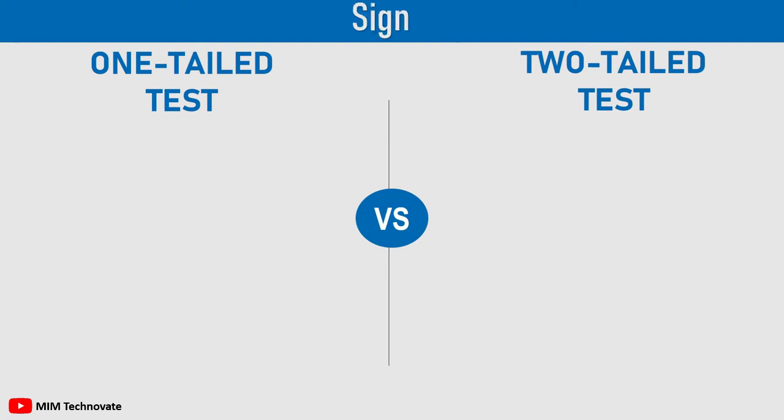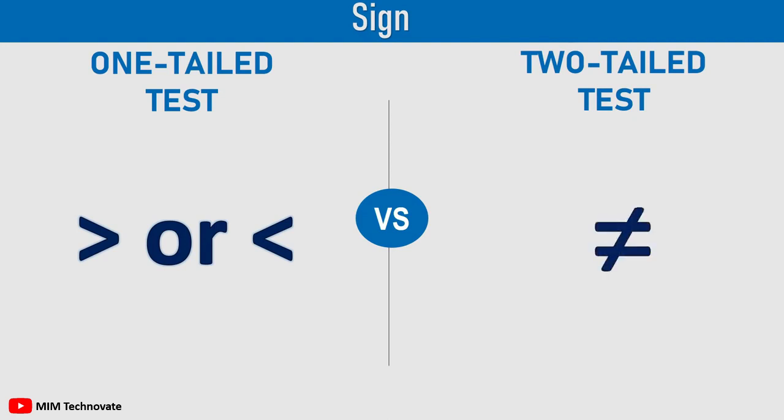When an alternative hypothesis has a greater than or less than sign, then a one-tailed test is carried out. When the alternative hypothesis has a not-equal-to sign, a two-tailed test is performed.